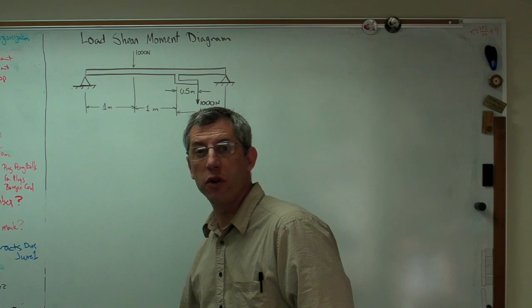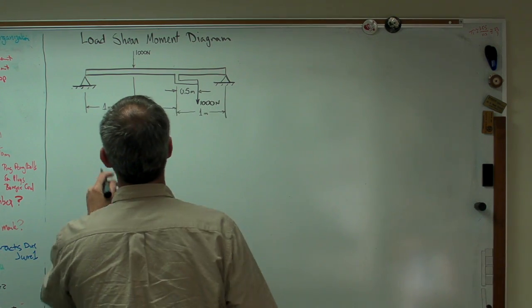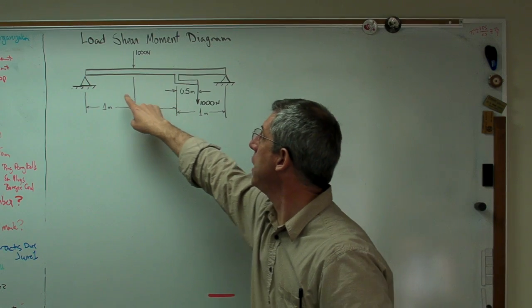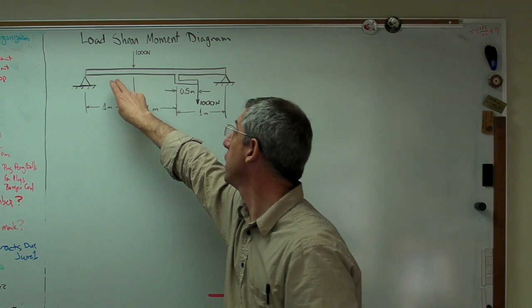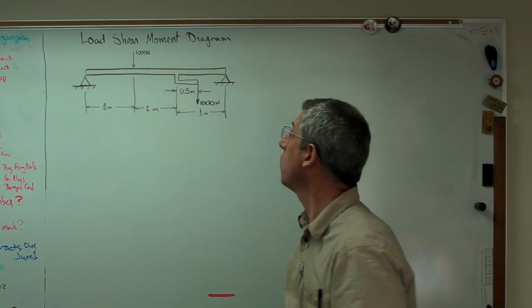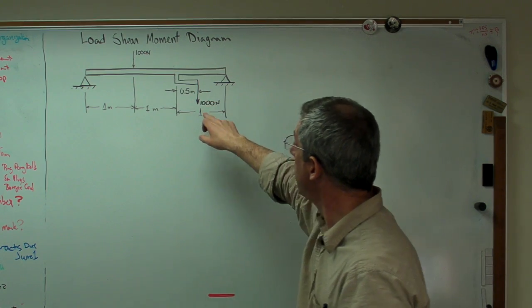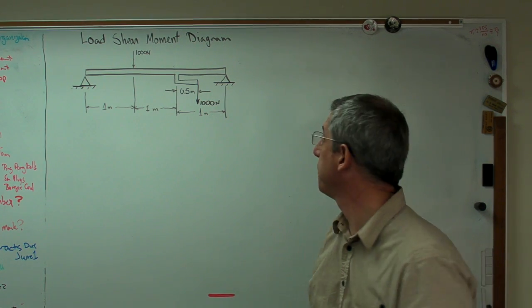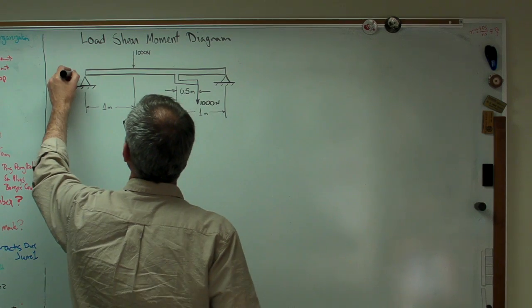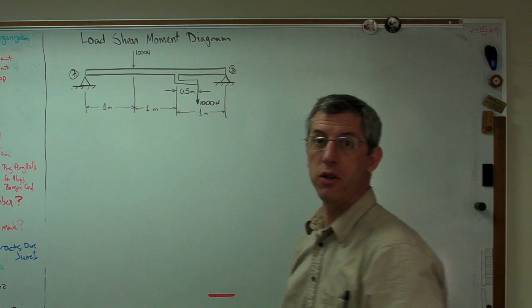So the first thing we're going to do is draw a free body diagram. And I've got this set up so the beam is divided into basically three parts that are each one meter wide, and that L bracket right there is half a meter wide. I'm going to call this A and B, those pin joints there.